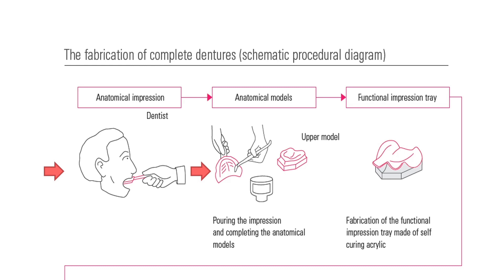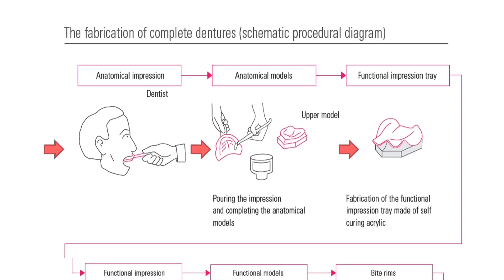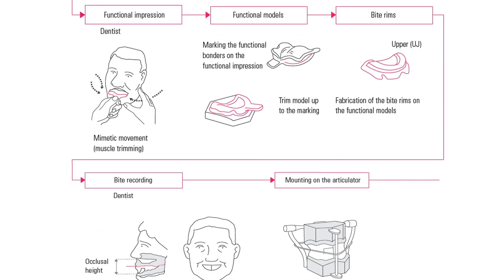In the primary cast, we will mark the anatomical landmarks, adapt the spacer, make the shoe stop, and then fabricate the special tray. This special tray will be used to make the secondary impression.